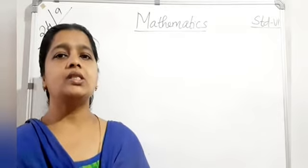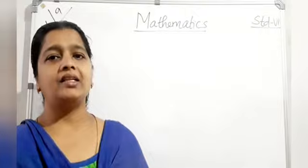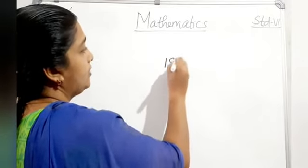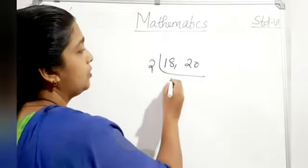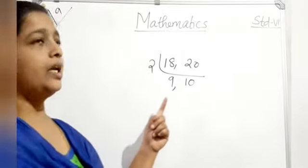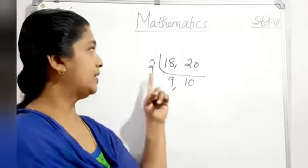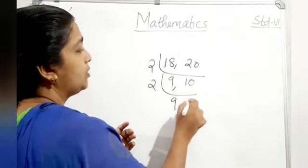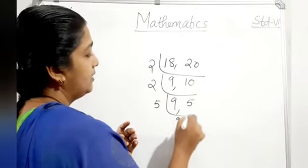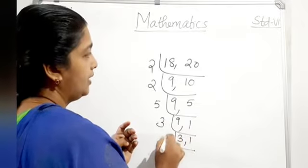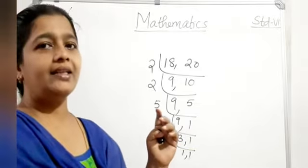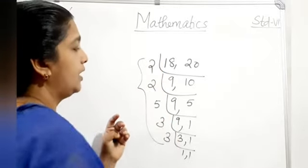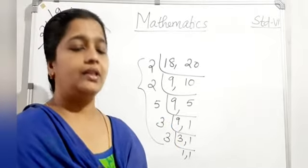Prime factorization means factorizing a given number using only prime numbers. For HCF and LCM example with 18 and 20: divide by 2 to get 9 and 10. Since there are no more common factors, HCF is 2. For LCM, continue dividing: 9 and 5, then 9 by 3 gives 3, then 1. Multiply all divisors: 2 × 2 × 5 × 3 × 3 to get the LCM.